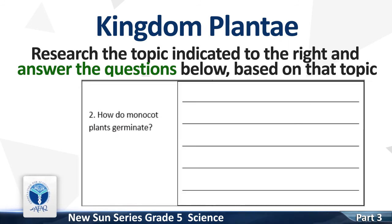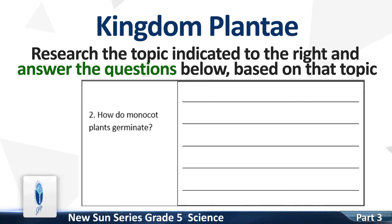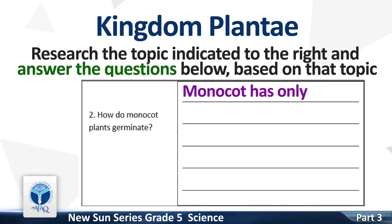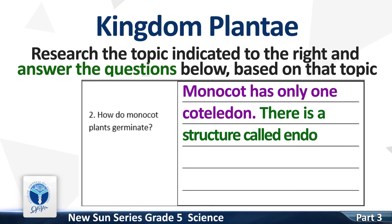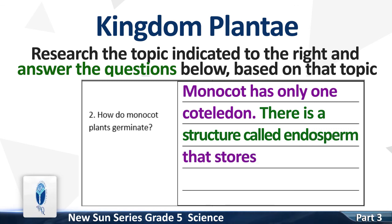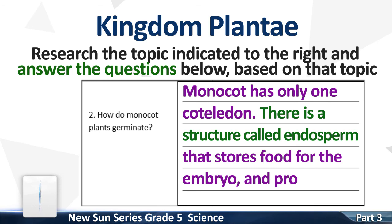Number 2. How do monocot plants germinate? Monocot has only one cotyledon. There is a structure called the endosperm that stores food for the embryo.